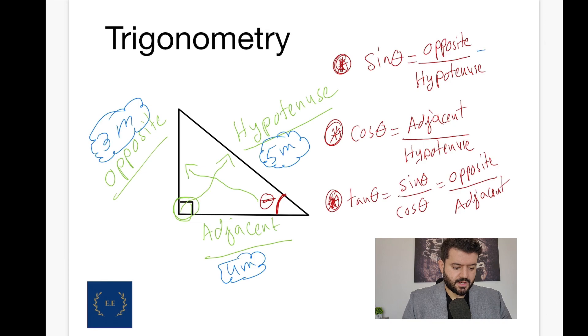Sine of theta equals to the opposite divided by hypotenuse. So, 3 divided by 5. 3 over 5. It's the opposite divided by the hypotenuse. Cosine of theta is adjacent divided by the hypotenuse. My adjacent side equals to 4 over 5.